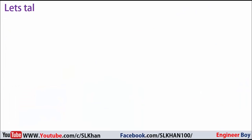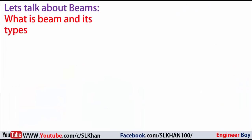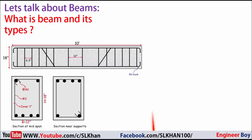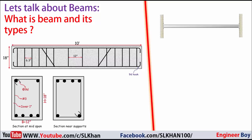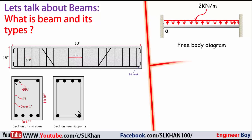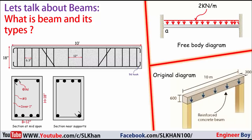First of all, let's talk about beams. Beams are commonly horizontal and straight members used to carry vertical loads. These types of members are designed and built to resist bending moment. However, sometimes when the span is short and carries heavy load, the internal shear force can become large enough to change the design.